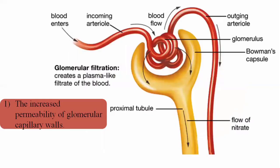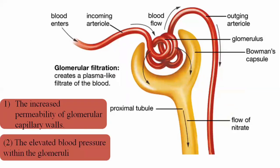The first factor is the increased permeability of glomerular capillaries, resulting in equal solute and plasma concentration on both sides. The second factor is elevated blood pressure in the glomeruli, also known as hydrostatic pressure. This elevated pressure results from the increased permeability due to the minute pores and spaces present in the filtration membrane of the glomeruli, with another filtration membrane present in Bowman's capsule.